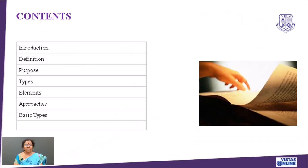First I will take you through the content of this video. The first video will be on introduction. I will be talking about definitions — we have got different definitions of literary interpretation. Then I will talk about the purpose of literary interpretation, then the types of literary interpretation, followed by elements of literary interpretation, then the approaches of literary interpretation, and then the basic key types that are used in the literary field.